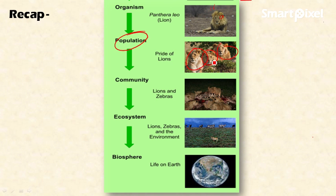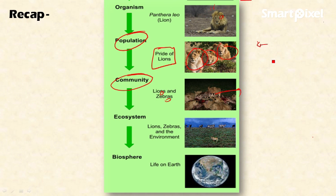The next level is community. Community is the group of two or more different species occupying a particular space for a particular time. Here, lions, zebras, deer, and all these species occupying a particular space and interacting with each other form the community. The next level is ecosystem, which is the interaction of this community with the abiotic factors like soil and climate.